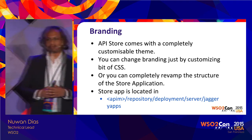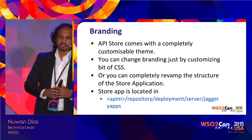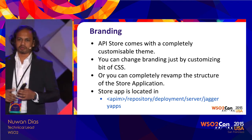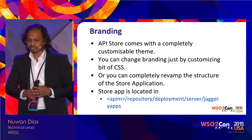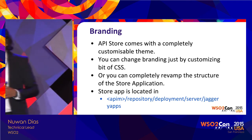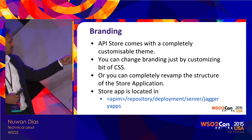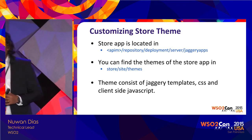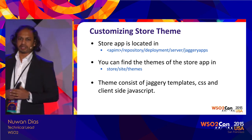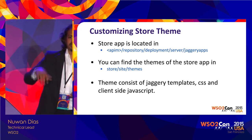Coming into branding: the API Store comes with some branding capabilities for both the Store and the Publisher apps. You would be interested in making UI changes to give the Store and Publisher the look and feel of your organizational themes. You can change the branding by editing template and CSS files. The publisher and store web apps are stored in the server's jaggeryapps location, and under the store's site themes directory you would find the template and CSS files to edit.